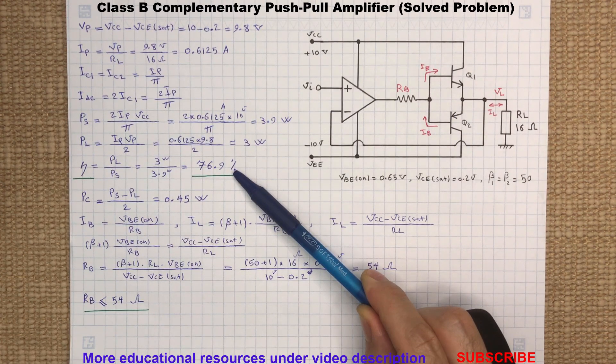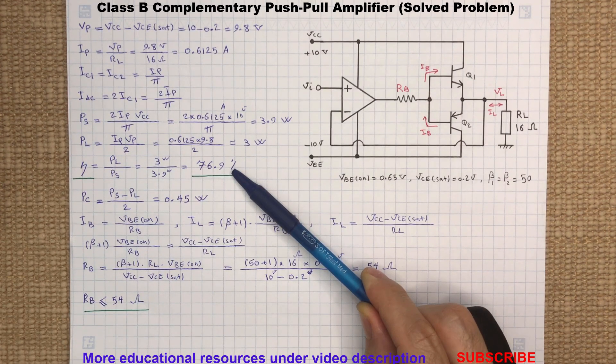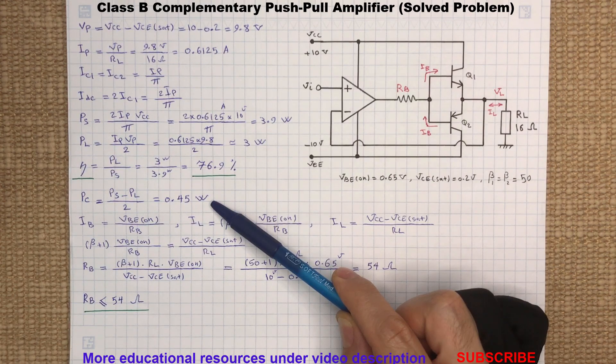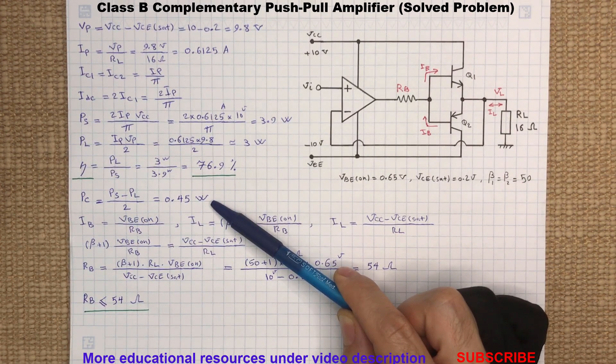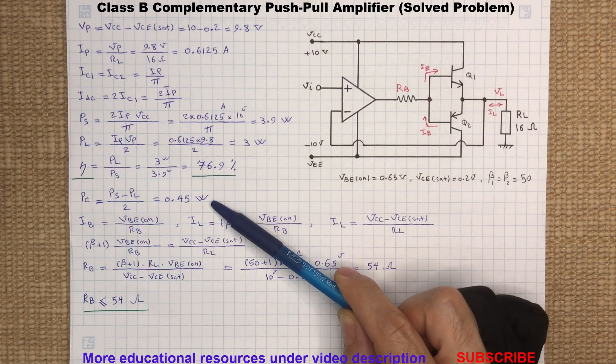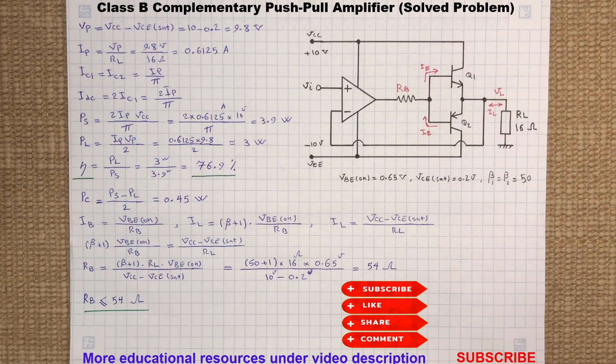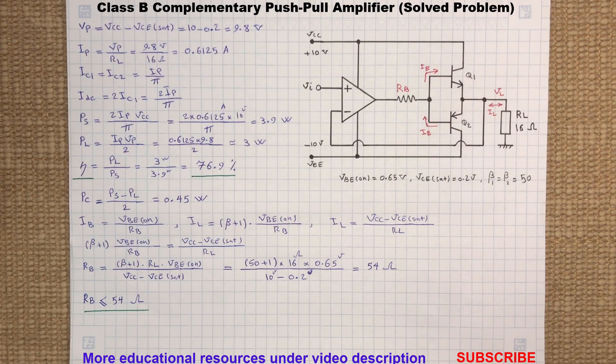The push-pull efficiency is not 100 percent because some of the power provided by the supply is dissipated in the transistors. Here, to find the power dissipated in each transistor, we can subtract the power consumed by the load from the power provided by the supply and divide by two because we have two transistors. By the way, if you like what you are watching, please hit the like button and also subscribe to the channel if you haven't yet.